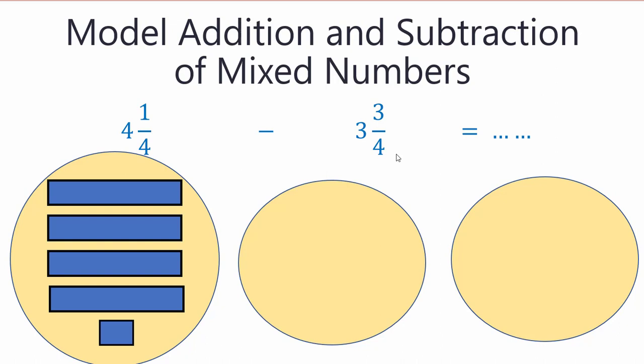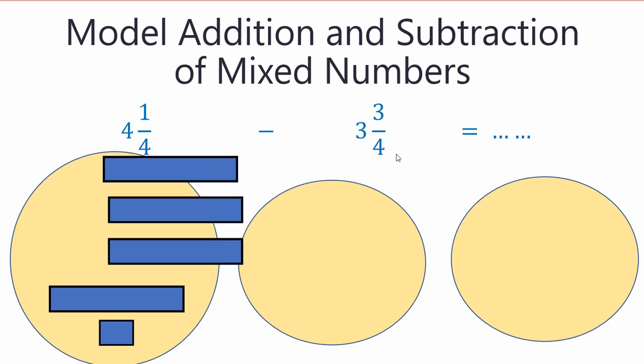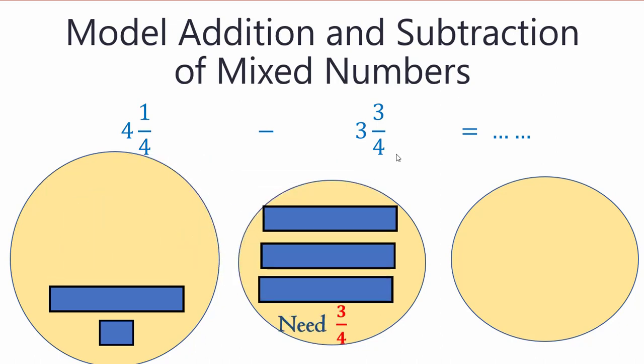Can we take three wholes? I think we have three already. Okay, let's take three wholes. But can we take three fourths? Oh, we cannot. Why? We don't have three fourths. We have only one fourth.